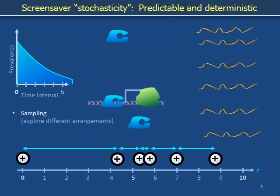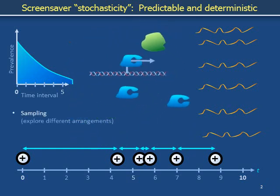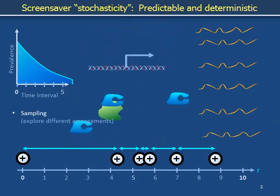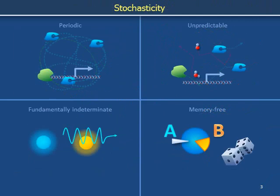We are sampling molecular spatial arrangements in a way that samples diverse time durations between transcription events. The periodic system sampled various configurations and a diversity of waiting times between events, but in a way that was both determined by the initial conditions and predictable.